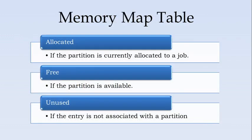In a multiprogramming system, it needs to have a memory map table. It will have entries marked as allocated, meaning if the partition is currently allocated to a job; or free, meaning if the partition is available for use by any of the processes; or unused, if the entry is not associated with any partition.